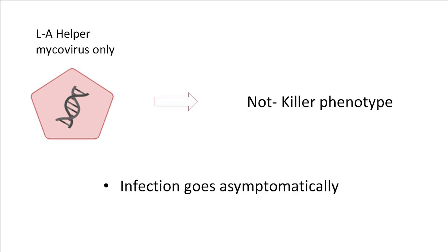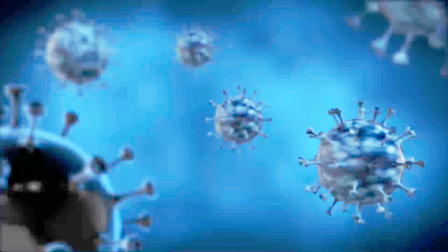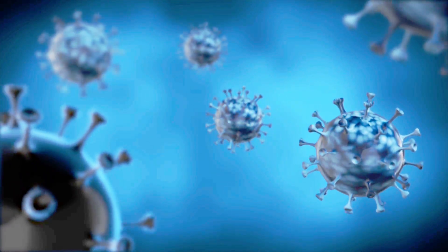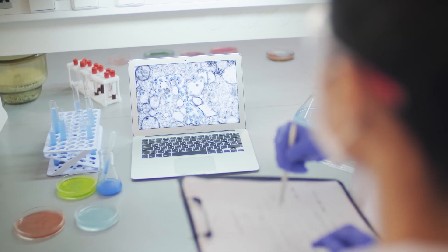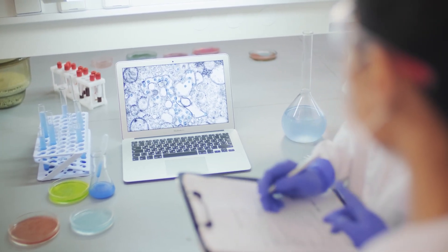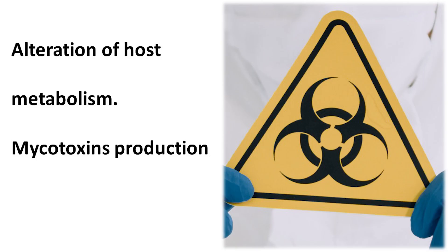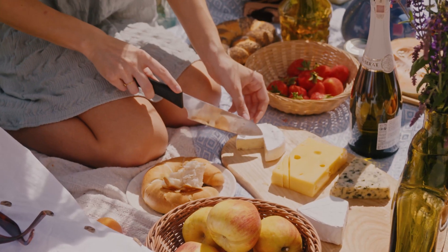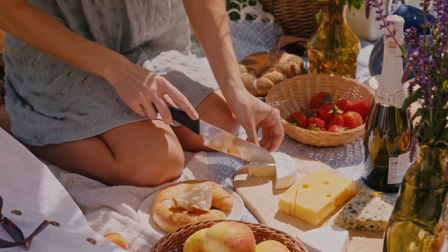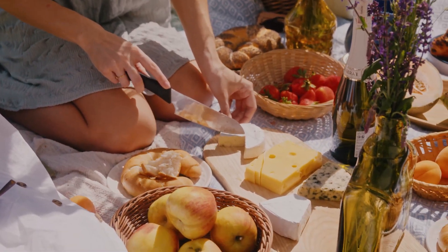The helper LA mycovirus by itself doesn't cause the killer phenotype, and infection in yeast cells goes asymptomatically. There are many examples of how viruses may alter fungal metabolism. Here I'll show only two, just to demonstrate how important it is to study fungal viruses. Mycoviruses may alter mycotoxin production. For example, Aspergillus ochraceus virus caused a specific interaction that led to overproduction of Ochratoxin A, which is, according to the European Commission, the second most important contaminant of food.